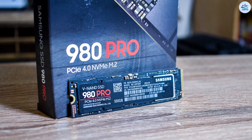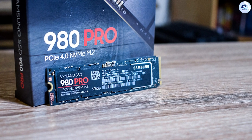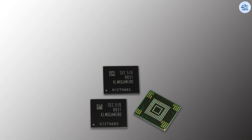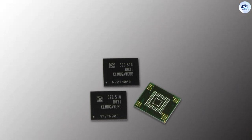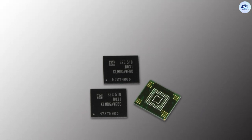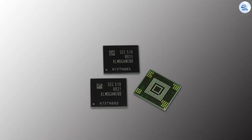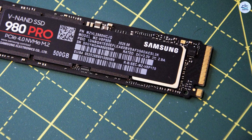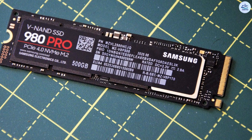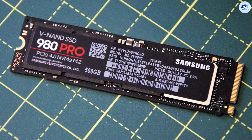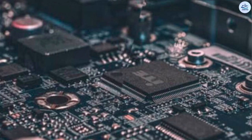eMMC and SSD differ in connections. eMMC is often directly soldered onto the motherboard, while SSD drives are usually connected to the motherboard via the SATA interface. If your laptop has no SATA interface, you are supposed to use eMMC. SSD and eMMC are also made of different components: SSD is composed of powerful controller chips and NAND flash memory, while eMMC is composed of similar components to an SD card or USB stick.